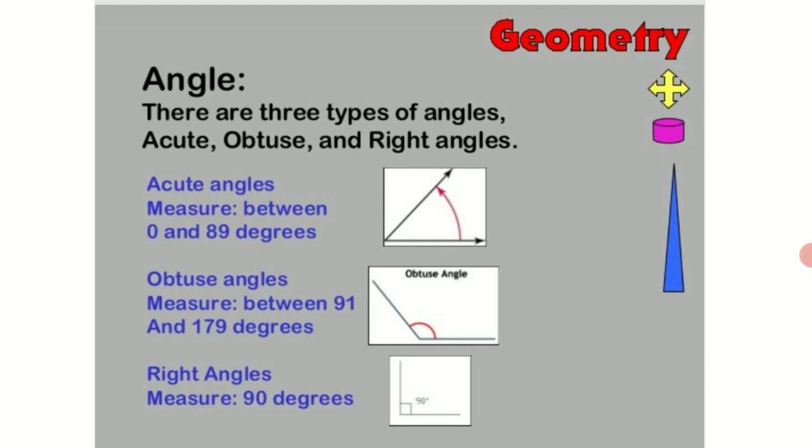What is an obtuse angle? An obtuse angle is an angle which measures between 91 and 179 degrees. That means it has to range between 91 and 179. Greater than 91 but lesser than 179 degrees.